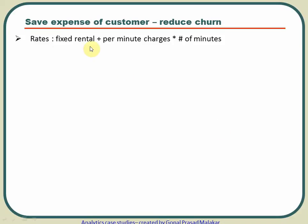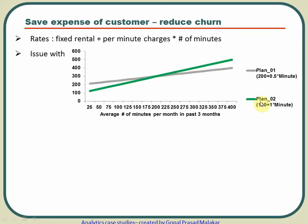The rates are structured with a fixed rental plus a per-minute charge multiplied by number of minutes used. For example, Plan 01 is 200 + 0.5 × minutes. If you use only 10 minutes, your expense is 200 + 0.5×10 = 205. Under Plan 02, it is 100 + 1×10 = 110. So you are paying 205 versus 110 for just 10 minutes of usage.